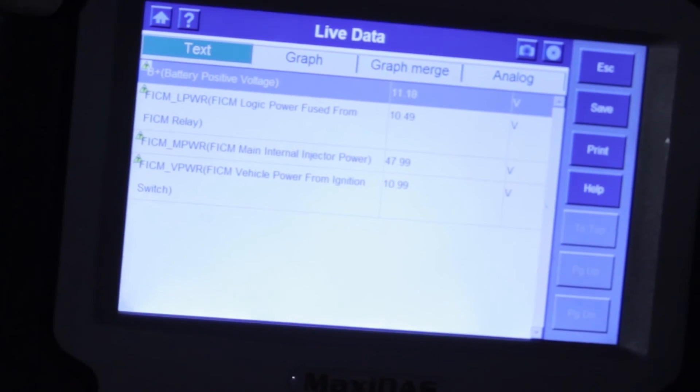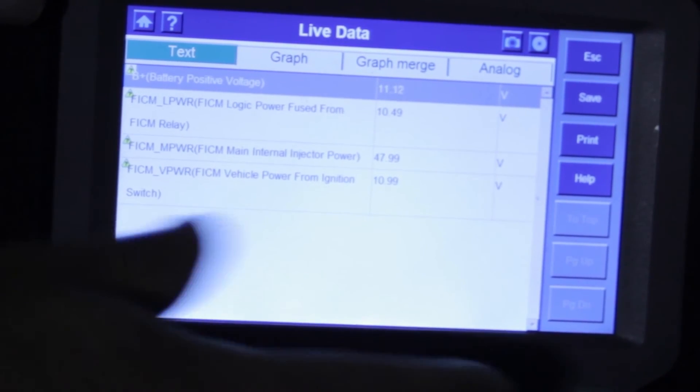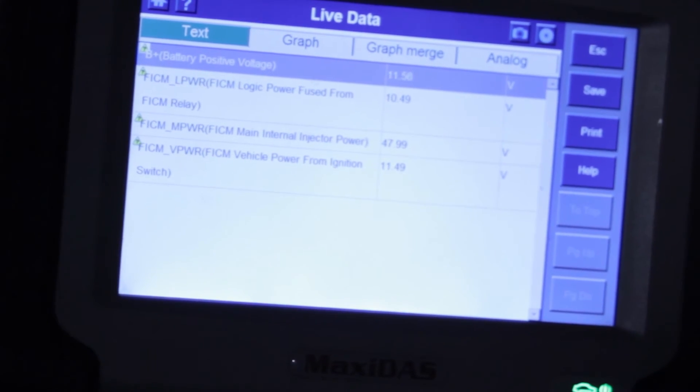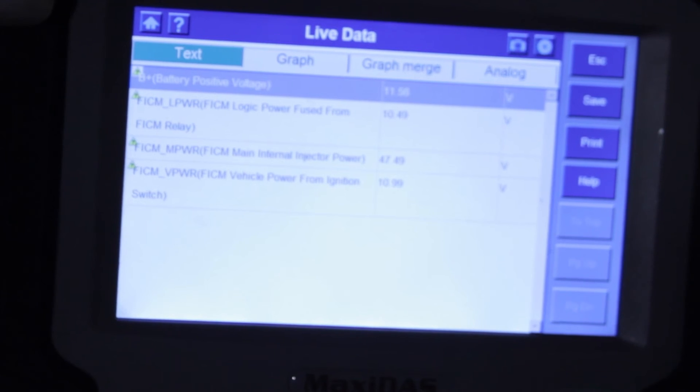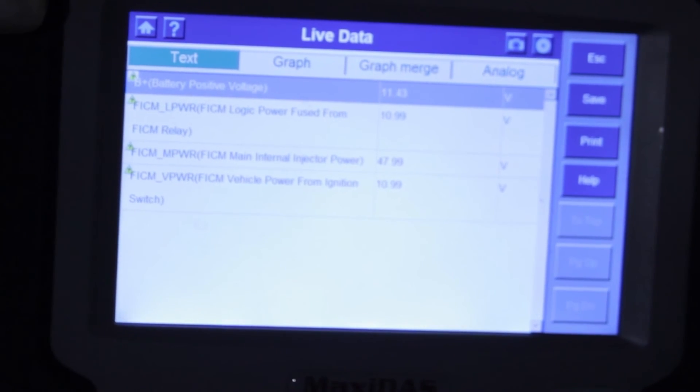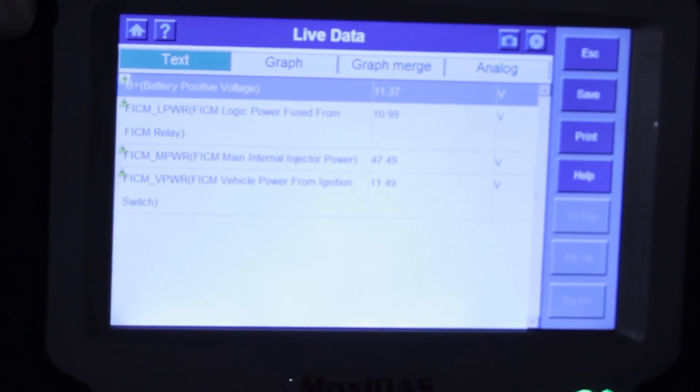There our truck starts and runs. Our battery voltage is still there. Our charging system voltage is now starting to come up. I'd say we've done a good job here. Now you've just seen how to repair a FICM system and a six liter power stroke.